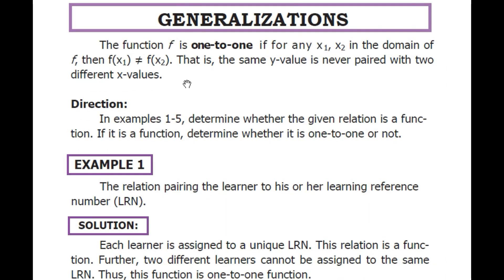The function f is one-to-one if for any x₁, x₂ in the domain of the function f — the domain is the allowable value for the function, the x coordinate — then f(x₁) should not equal f(x₂). That is, the same y value can never be paired with two different x values.